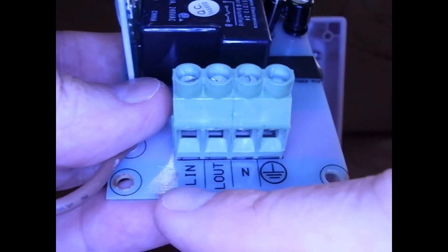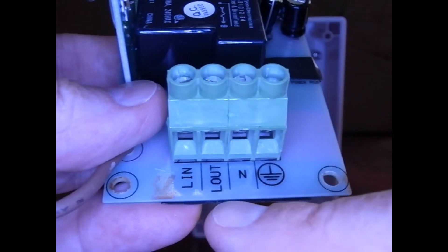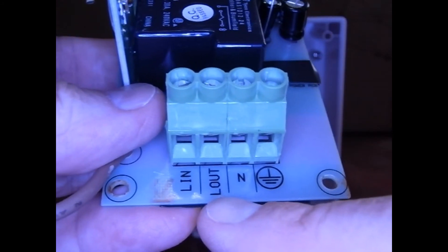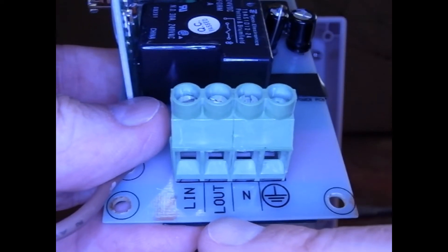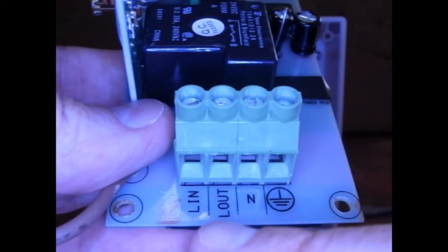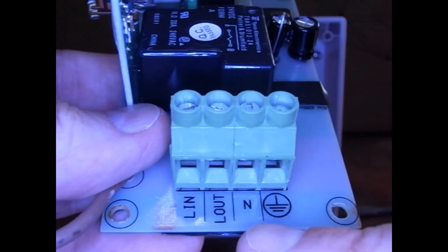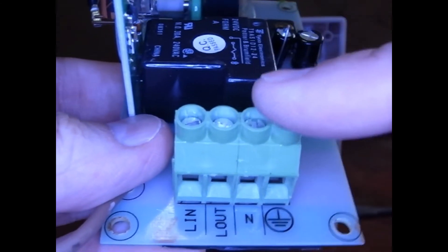On this side we can see the line in, which is the hot, the line out. So this is the power in and this is the controlled out. So when there's a brown out, this is what's turned off, is that L out. There's your neutral and your ground.